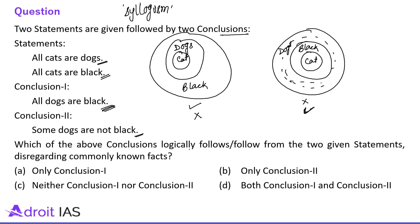The question asks which conclusion logically follows from the two given statements, disregarding commonly known facts. The answer is: neither conclusion one nor conclusion two. The correct option is option C. The ideal solving time is around 40 to 50 seconds — maximum one minute, not more than that.